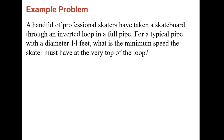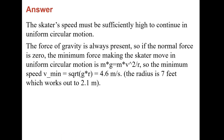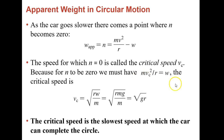Professional skaters have taken a skateboard through an inverted loop in a full pipe. For a typical pipe with a diameter of 14 feet, what's the minimum speed? The minimum speed has to be enough where the normal force is zero. So mass times gravity — your weight — equals your centripetal force. The masses cancel, leaving us with gravity times r, and taking the square root gives 4.6 meters per second. The radius is 2.1 meters. The minimum speed comes from setting our normal force to zero.